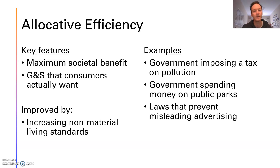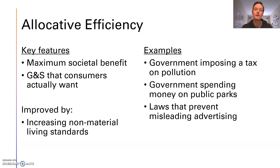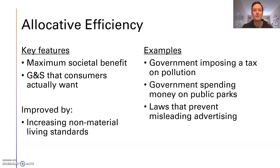How we improve allocative efficiency is through anything that will increase non-material wellbeing. Some examples: the government might impose a tax on pollution. We said before that anything involving a tax would generally worsen technical efficiency, and that policy would indeed worsen technical efficiency. But governments implement a policy like that to achieve allocative efficiency even if it means technical efficiency worsens — it's just a balancing act. What's good for one will worsen the other and vice versa. Another example might be government spending money on public parks. That does nothing for technical efficiency, but it's nice and people like living in places that are nice to live in, so that kind of policy would improve allocative efficiency.